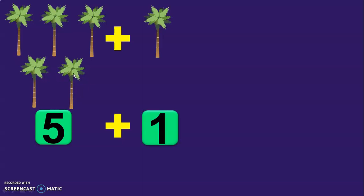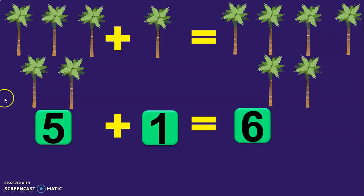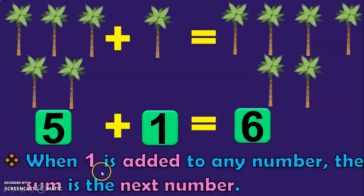Let us learn the next property now. While passing through the row, you come across 5 trees. When you move through the next row, you see one more tree. What is the total number of trees that you saw now? Let us count: 1, 2, 3, 4, 5, and 6. So the total number of trees is 6. This is your third property: when 1 is added to any number, the sum is the next number. In this case, we added 1 to 5, and the number next to 5 is 6, so the answer is 6.